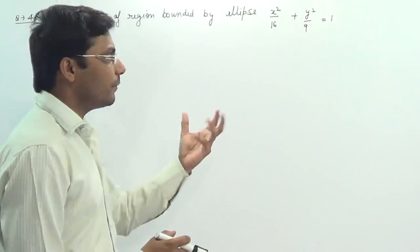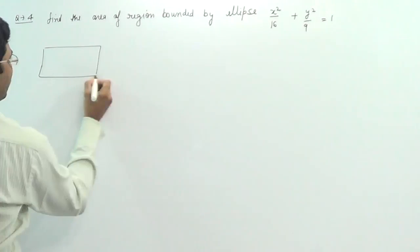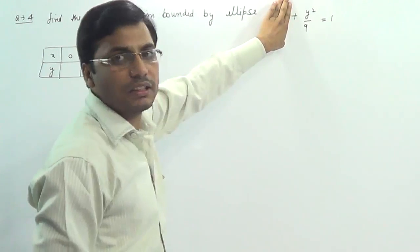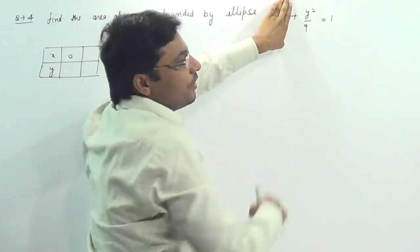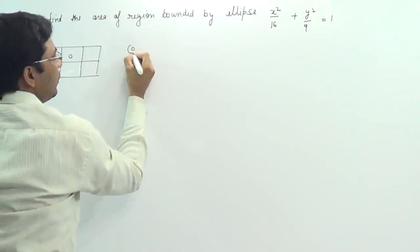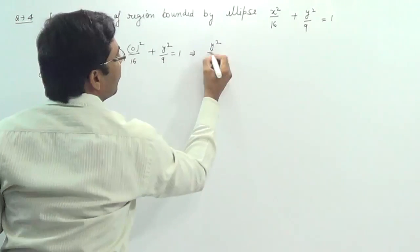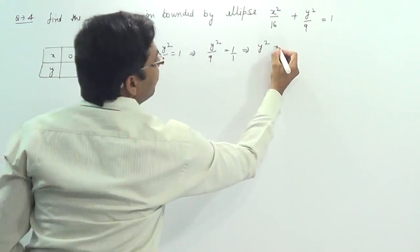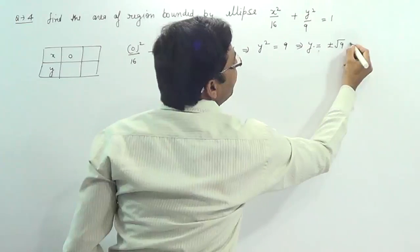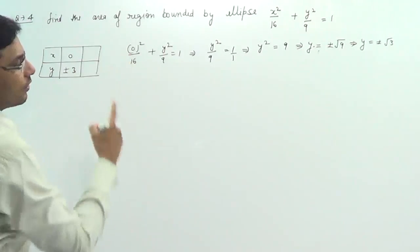We need to find some key points to draw the ellipse. Plugging x equal to zero, x² upon 16 becomes 0, so y² divided by 9 equals 1. Multiplying both sides by 9, y² equals 9, so y equals plus or minus root 9, which is plus or minus 3.